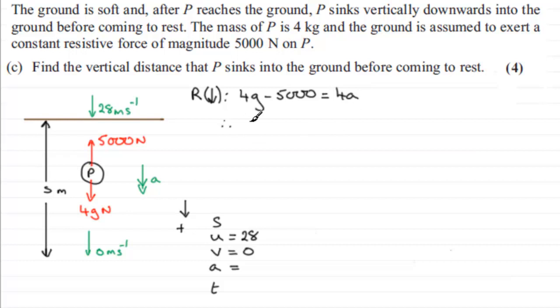So to get A, all I need to do is rearrange this. Let's do 4 times G, G being 9.8, and then minus 5000, and then divide by 4. And that will give us the value of A. And if you do that, you end up with A being a negative number as we would expect because it's decelerating. And it's minus 1240.2 meters per second per second. So we've now got our value of A, which we can put in as minus 1240.2.